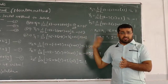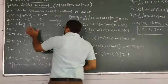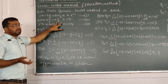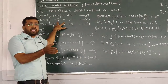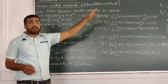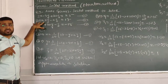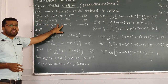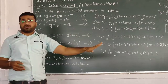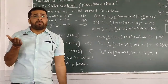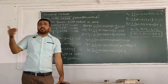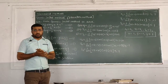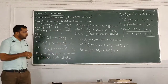This is the way of solving a system of linear equations by the Gauss-Seidel method. Note that when the coefficient of x is much larger than the sum of coefficients of y and z — that is, when diagonal dominance is strong — the iteration converges faster. If the coefficient is not much larger, more iterations are required. Thank you.